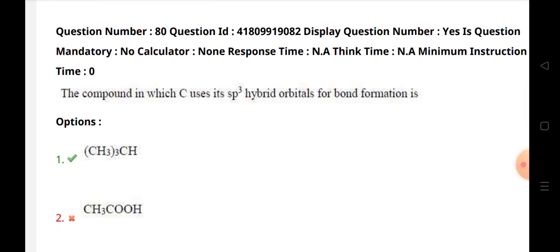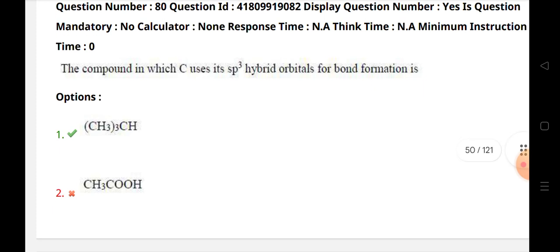The compound in which carbon uses its sp3 hybrid orbitals for bond formation is CH3-CH3.